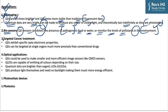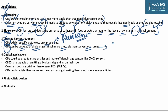Quantum dots can also be applied in targeted cancer treatment. They exhibit specific optoelectronic properties and can be used for fluorescence imaging, where quantum dots are injected into the body and when they encounter a cancer cell, they attach to it. When light of a certain frequency is shined, it lights up and doctors can precisely target these cells. Quantum dots can be targeted to single organs much more precisely than conventional drugs, reducing unpleasant side effects characteristic of untargeted traditional chemotherapy.